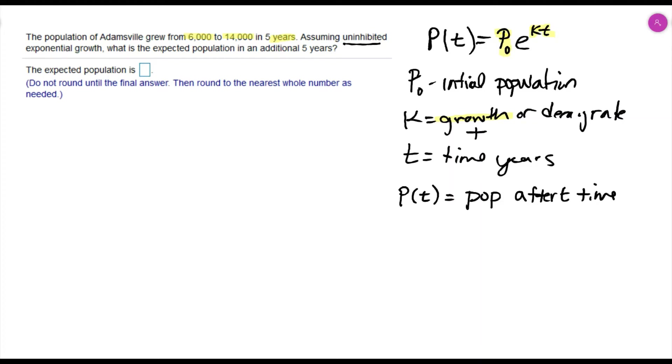Looking at our problem again, we have the population grew from 6,000 to 14,000 in five years. So we start with 6,000, and since we're starting with 6,000, that's going to be our P₀, our initial population.